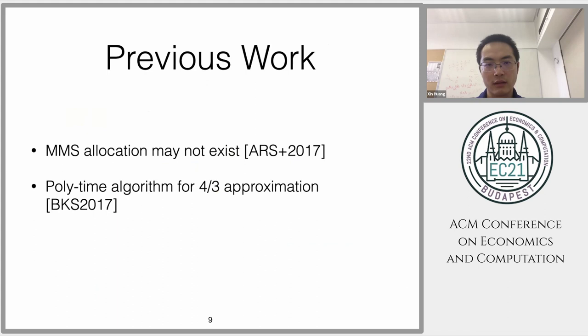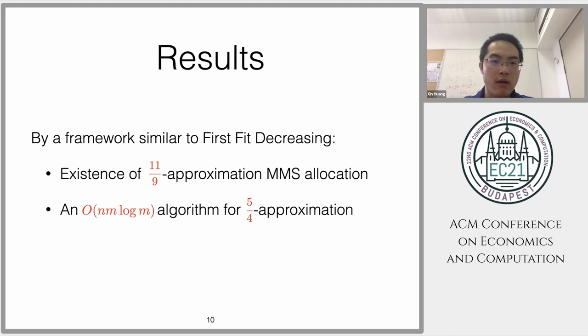Previous work shows that the maximum share allocation may not exist. Besides that, the best known result is a polynomial algorithm for the four-thirds approximation. For our work, we start from a framework which is similar to a first-fit decreasing algorithm, and we prove the existence of 11/9 approximation maximum share. We also give a very efficient algorithm for the 5/4 approximation.